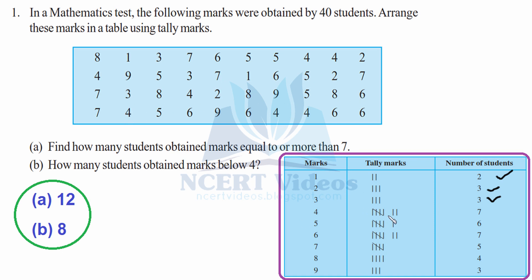Remember: the fifth mark is a slash or dash which cuts through all the previous four marks. We find 4 a sixth time and a seventh time, so we count and write seven. Using the same method, you can find the tally marks for the remaining numbers from 4 to 9.